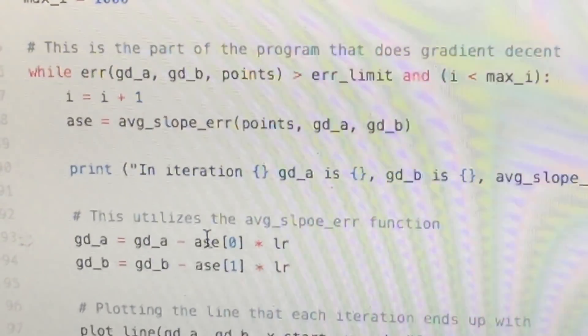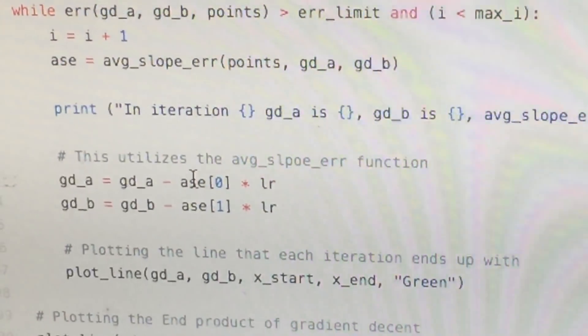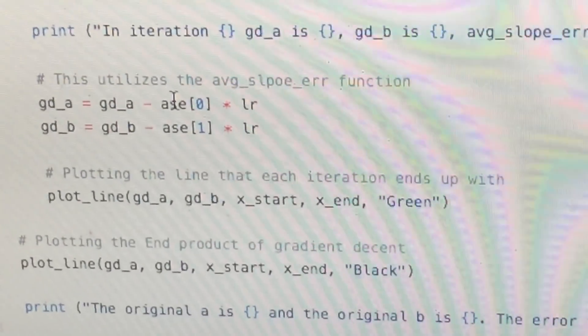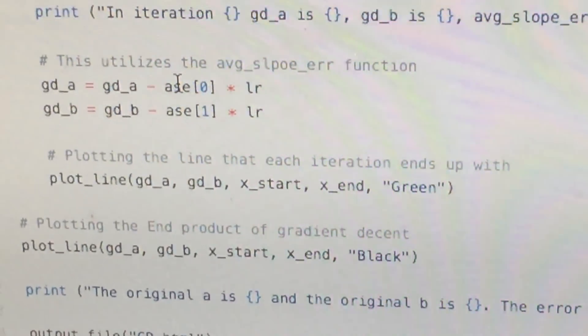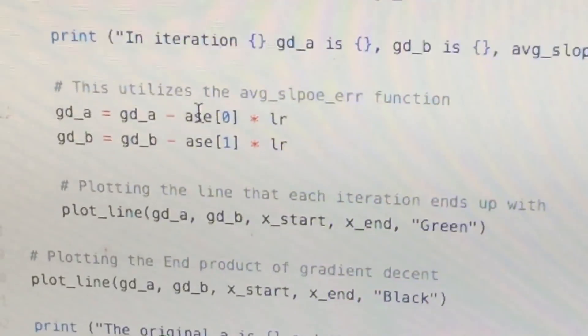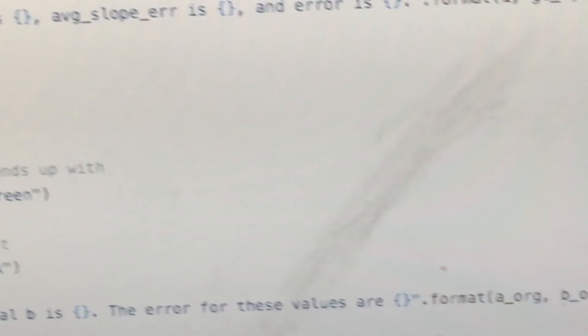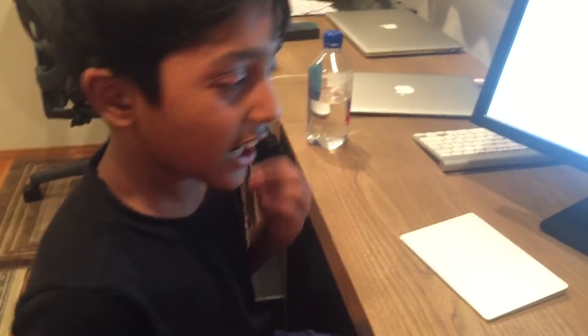And then here you're plotting the line for each iteration, and here you plot the end product of gradient descent which is black so that you can differentiate it. Now this prints the original a and b and the error. Surprising part is the original a and b have more error than the end value. And then I just save it in a bokeh plot so then you can view it.